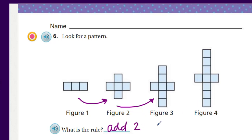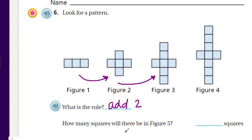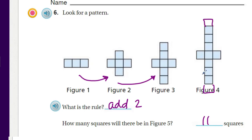Two additional boxes are being added on by each figure. How many squares will there be in figure five? If we have our three and then we have our six, that would be nine — two more — yeah, that would be 11. So it'd be 11 squares. We'd end up with one additional box here and one more up here to get our two. Pretty simple.